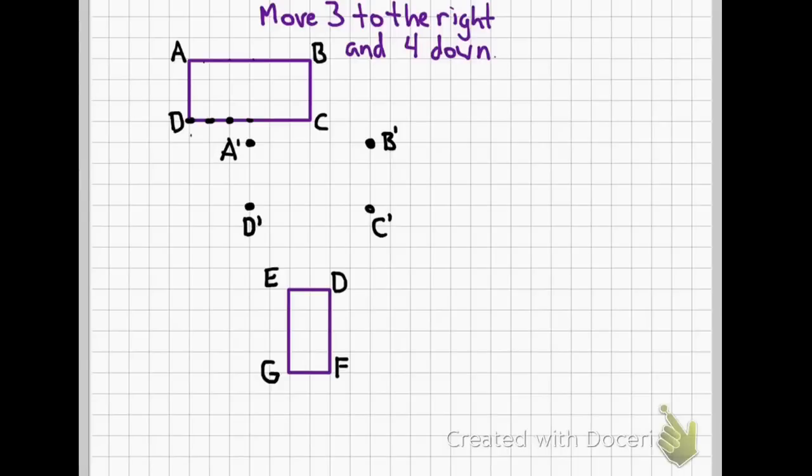And what we've now created is a new image, a new copy of our original rectangle that we'd call a prime, b prime, c prime, d prime, or you could just say it's the image. It would be the exact same copy. And realize it doesn't look the same because I drew the first one as a rectangle. But it's a shifted version.